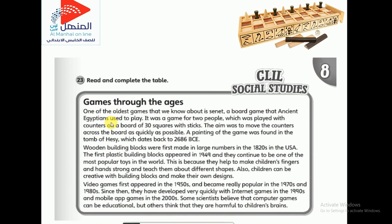Senet was played with counters — like chess pieces — which used to be stones, some white and some black for each player. The board had 30 squares and was played with sticks. The aim was to move the counters across the board as quickly as possible. We know the ancient Egyptians played this game because a painting of it was found in the tomb of Hissi, dating back to 2680 BC.